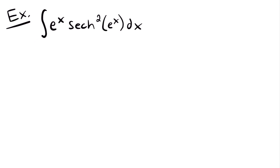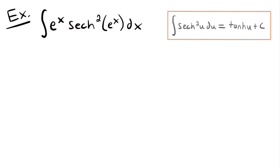For our last example, we have the integral of e to the power of x times hyperbolic secant squared of e to the power of x, dx. Right away I see a function inside our hyperbolic function, so we'll likely want to set that equal to u. We also know the integral of hyperbolic secant squared of u du equals hyperbolic tangent of u plus c. The derivative of e to the x is itself e to the x, which is already present in our integral — so u-substitution will work perfectly here.